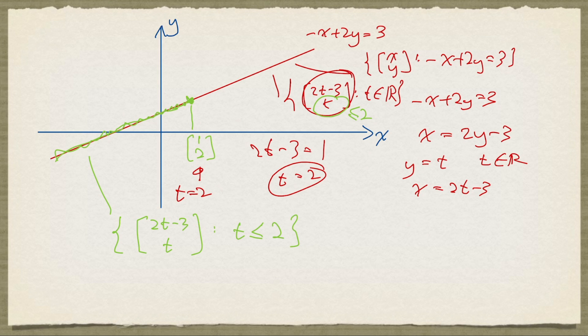And similarly, if we want to describe all the points on this half line, starting at (1, 2), it would be the same formula for the coordinates, but t is at least 2.